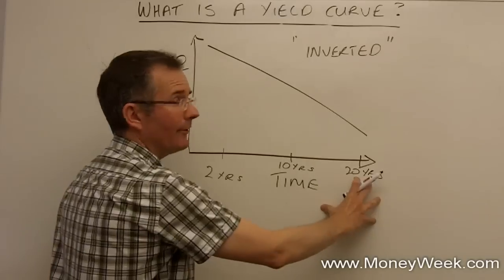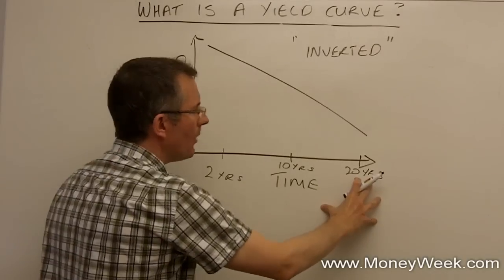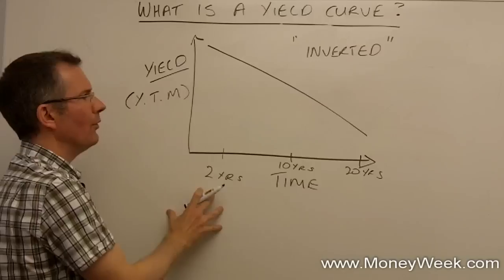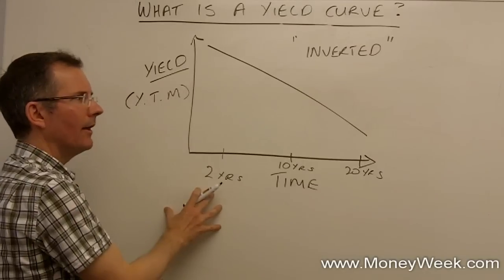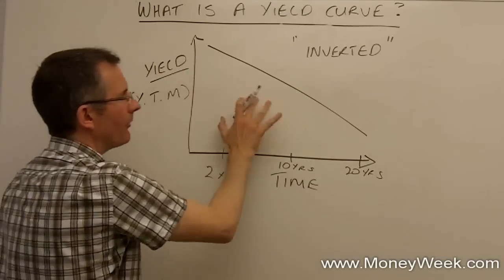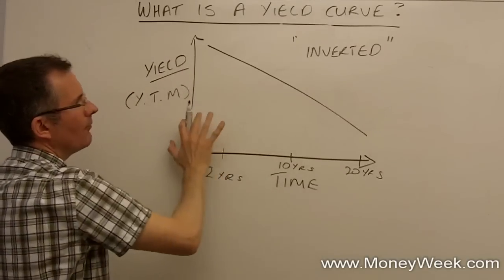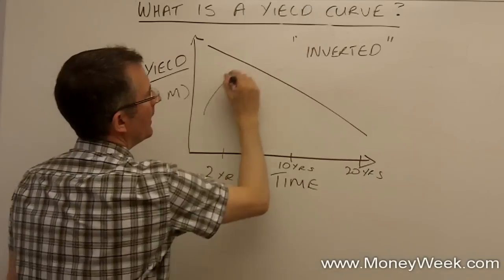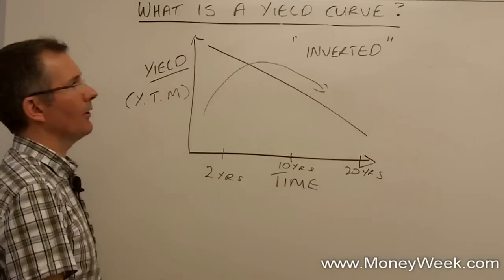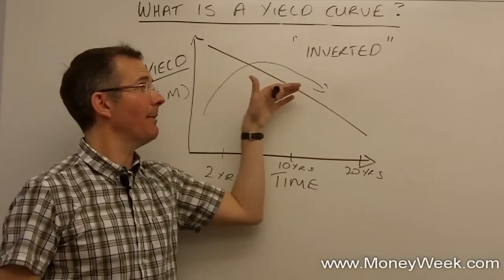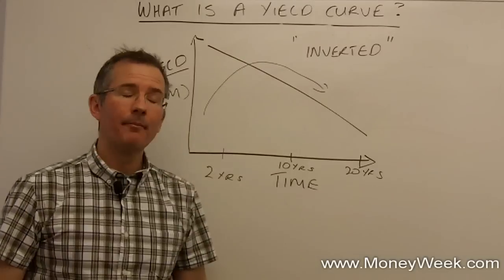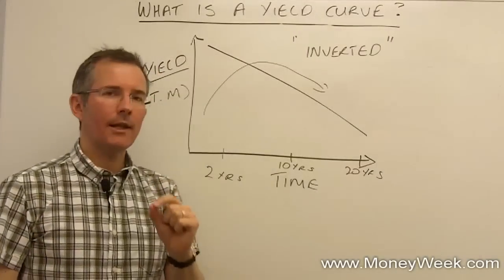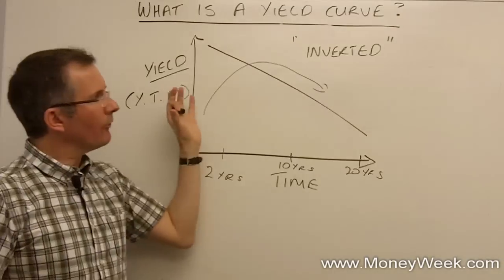So, you're actually saying that what's happening is for locking my money up with, say, the government for 20 years, I'm being offered, what, a lower yield than just for two? What's going on there? Well, sometimes a yield curve moving from normal into inverted shape, if you like, and obviously it can go virtually flat in the middle, is a sign of trouble. It's the bond market signalling trouble, because this is what tends to happen.